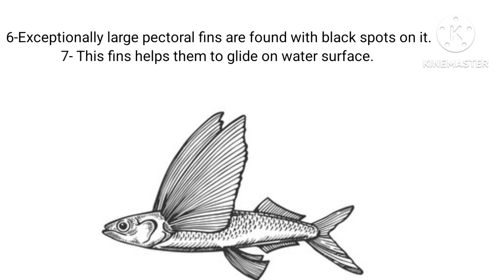They have parachute-like pectoral fins which have black spots on them. Due to the presence of these large pectoral fin-like structures, they can easily glide over the surface of the water, making them exceptional fishes.